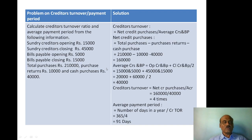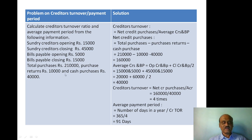Next, one more problem on creditor turnover ratio and average payment period. Calculate creditor turnover ratio and average payment period from the following information: sundry creditors opening 15,000, closing rupees 45,000, opening bills payable 5,000, closing bills payable rupees 15,000, total purchases rupees 2,10,000, purchase returns rupees 10,000, cash purchases rupees 40,000.